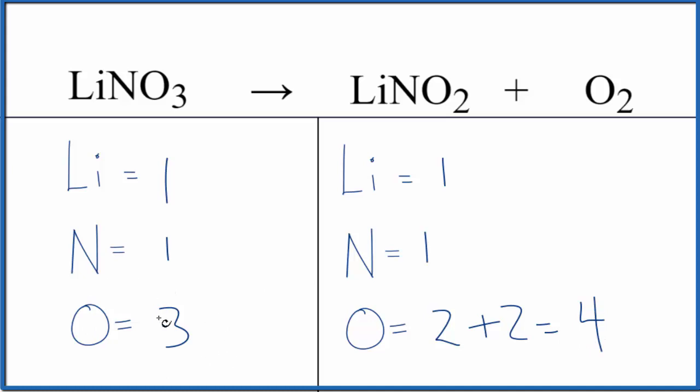Let's try to get this number here to an even number. That's usually a pretty good strategy. So if we do that, we'll put a two here, one times two. That'll give us two lithiums, one times two gives two of these nitrogens, and two times three gives us six oxygen atoms.